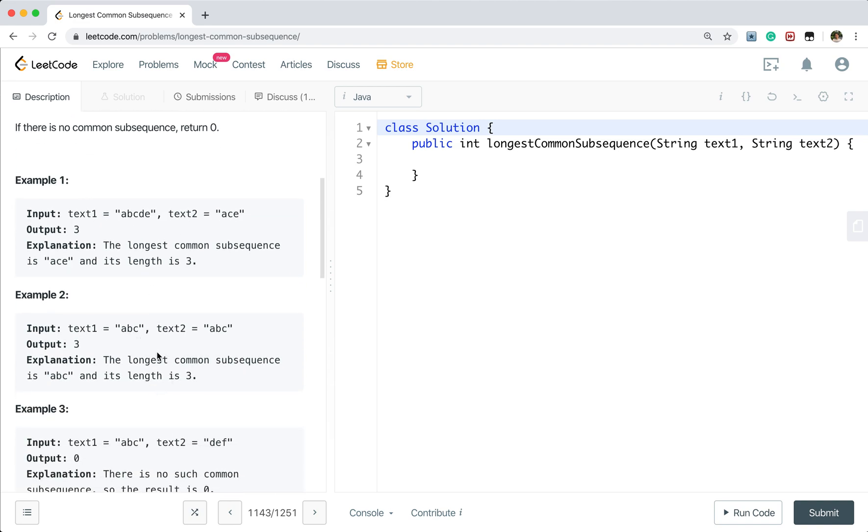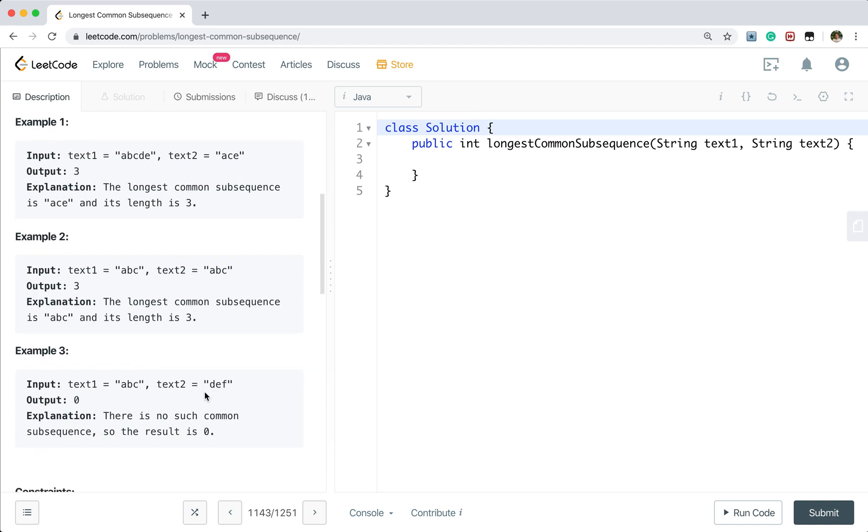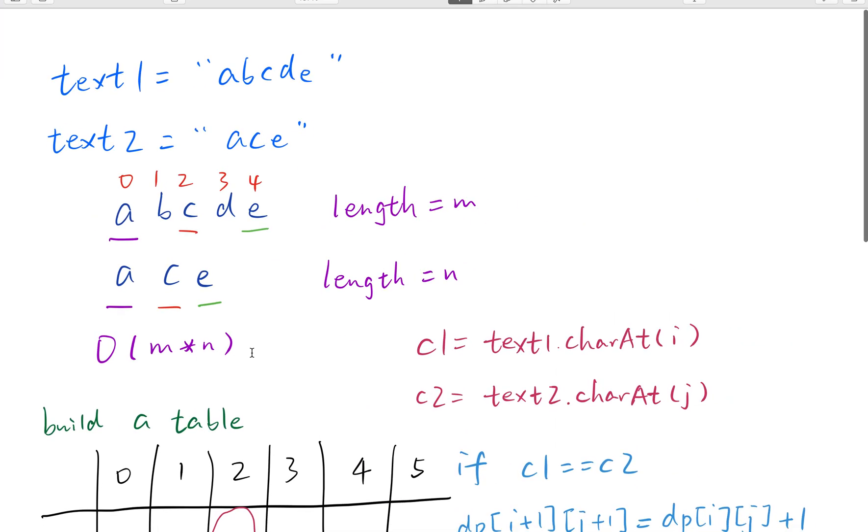In this example the two strings are exactly the same. So the longest common subsequence is 3. Let's see how to solve this problem. As I said, this is a typical DP problem. We can use the bottom up approach.